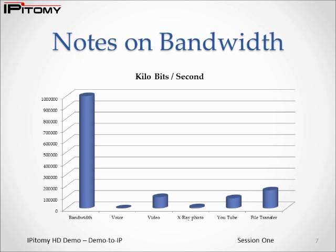On the chart here, we plotted bandwidth usage for a few different applications on a 1 gigabit per second network. Notice that the voice traffic occupies almost no bandwidth in comparison to other applications. When we add multiple users to any of these applications, you can see how important setting QoS becomes.